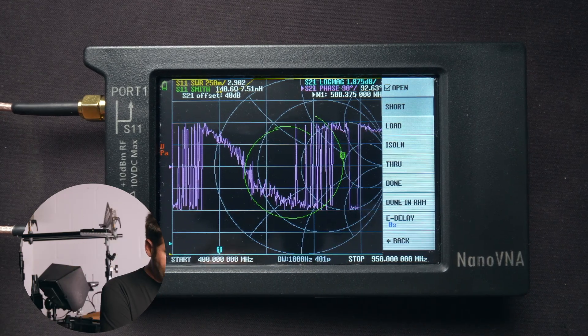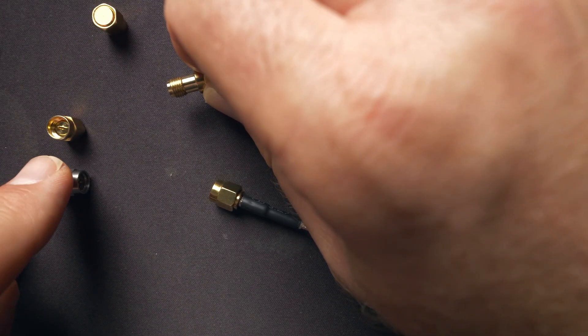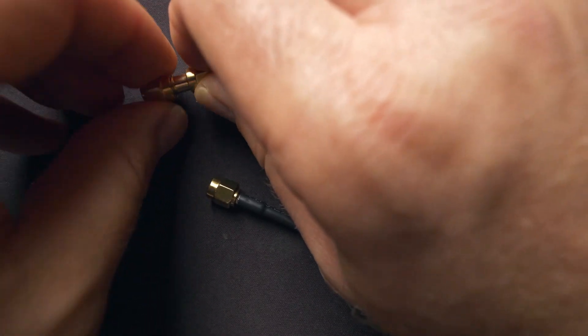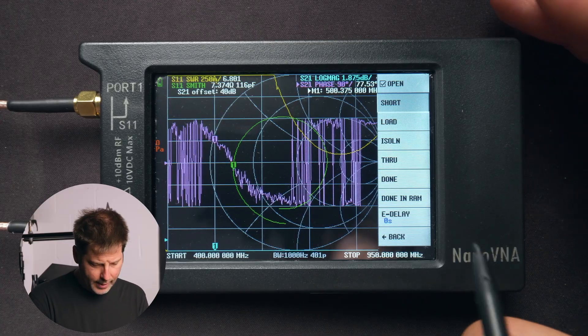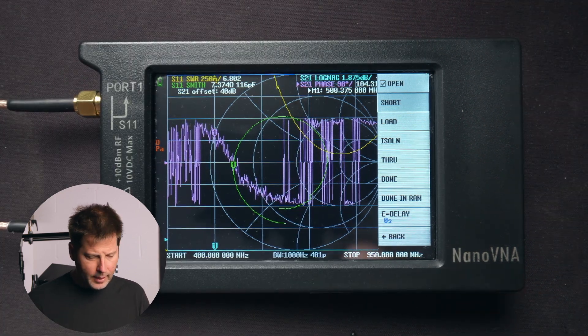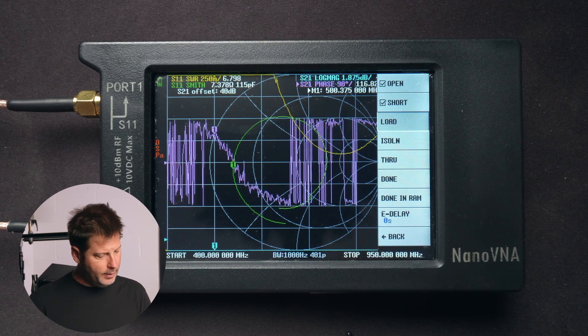So we'll go ahead and disconnect that terminal cap and add the short. Now that the short is added, we'll go ahead and press short here and let that calibrate. And when that is complete, the next one will highlight, which is load.